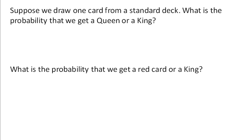Well, the probability of a queen is, let's see here, there's 4 of them out of the 52 cards in the deck. What's the probability of a king? 4 out of 52.